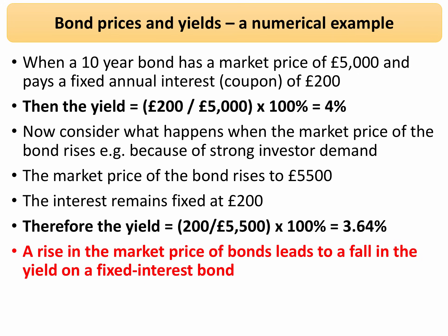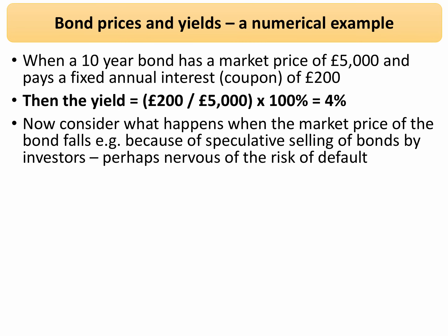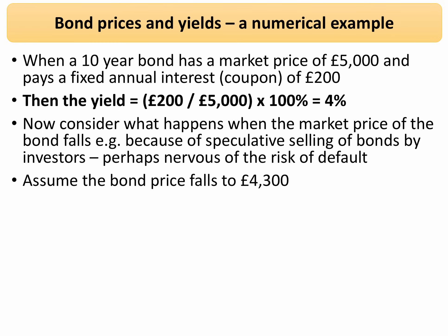Now let's play out an example where the market price of the bond goes down. For example, speculative selling in the bond market — people start selling bonds. Bond prices will go down, causing bond yields to go up because of the inverse relationship. Going back to the initial example, the bond was £5,000 paying £200 in interest. Now consider what happens if there's speculative selling — maybe there's a risk of partial default by the government. Speculators get nervous and start selling, causing the market price of the bond to drop to £4,300.